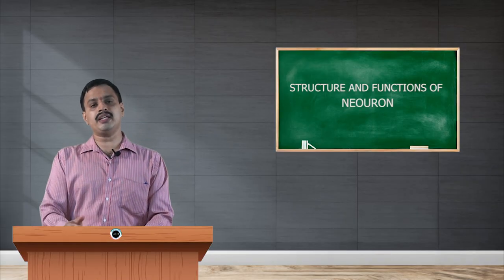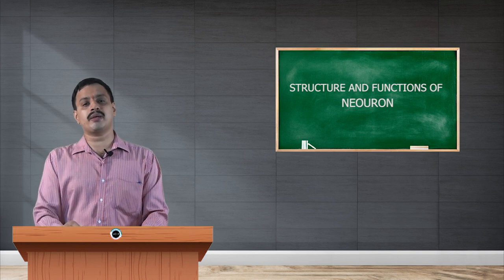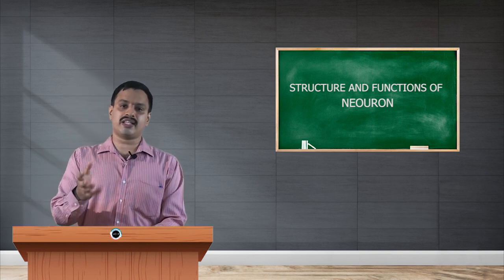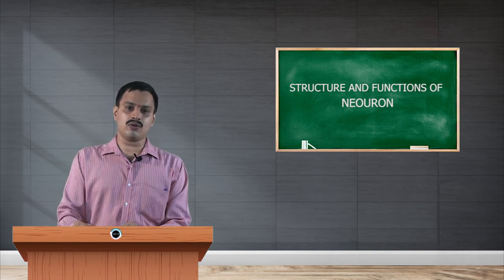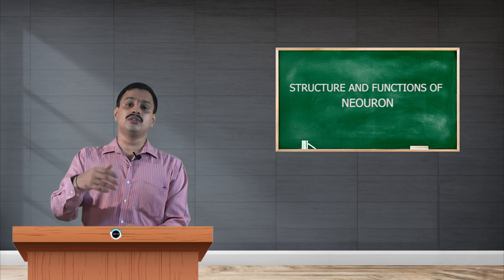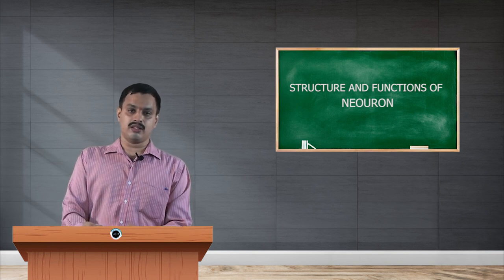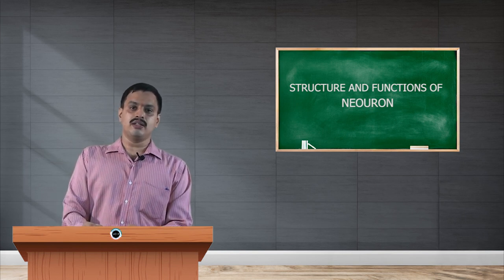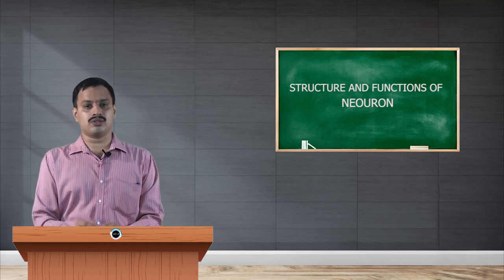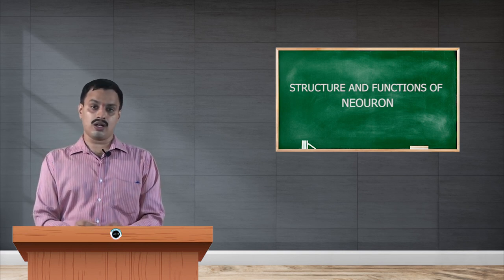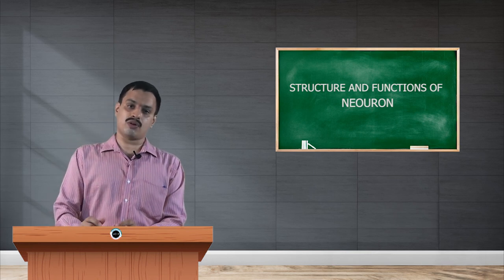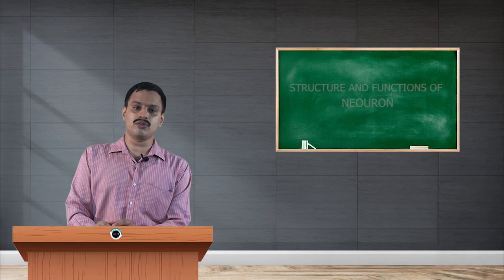Neurotransmitters are many in number. Some examples of neurotransmitters are dopamine, serotonin, and acetylcholine — there are many more. Now let me tell you the types of neuron. There are mainly three types: motor neuron, interneuron, and sensory neuron. These are the three types of neurons. Thank you.